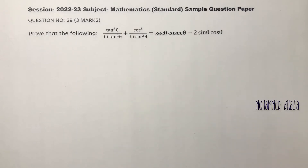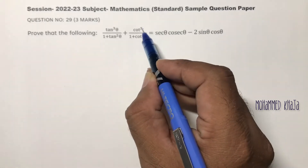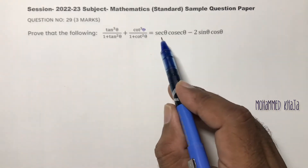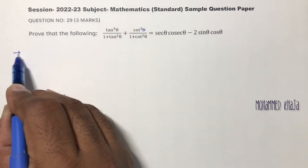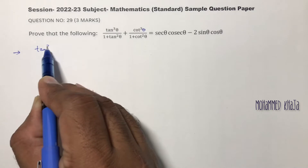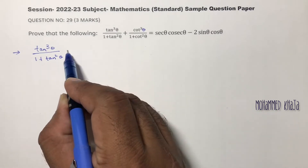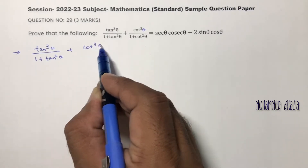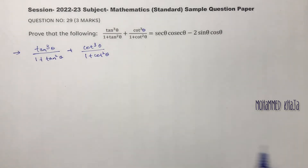Session 2022-23 mathematics standard paper, question number 29, board sample paper, three marks. Prove that tan cube theta by 1 plus tan square theta plus cot cube theta by 1 plus cot square theta equals sec theta cosec theta minus 2 sine theta cos theta. Taking the LHS: tan cube theta by 1 plus tan square theta plus cot cube theta by 1 plus cot square theta.